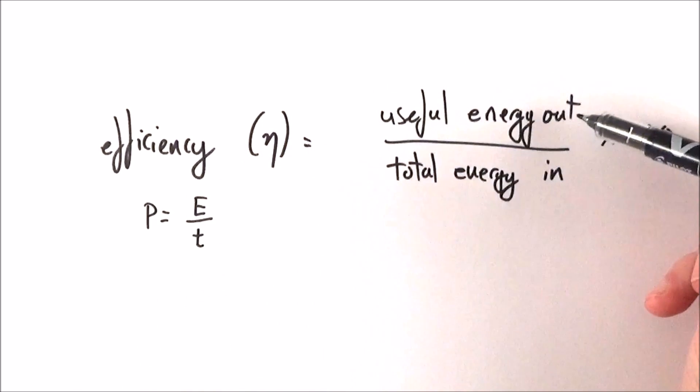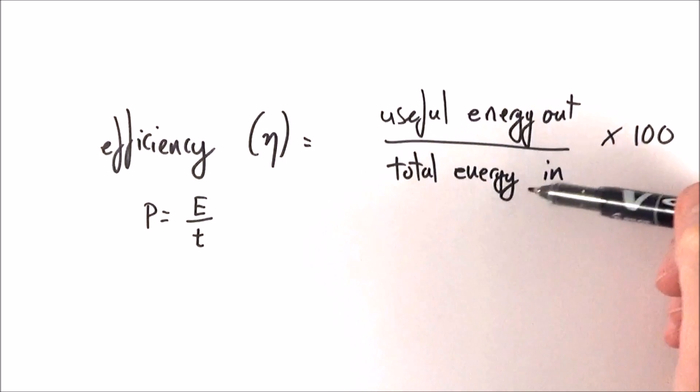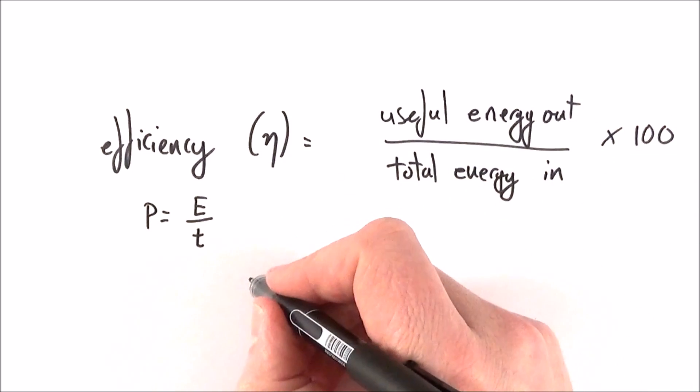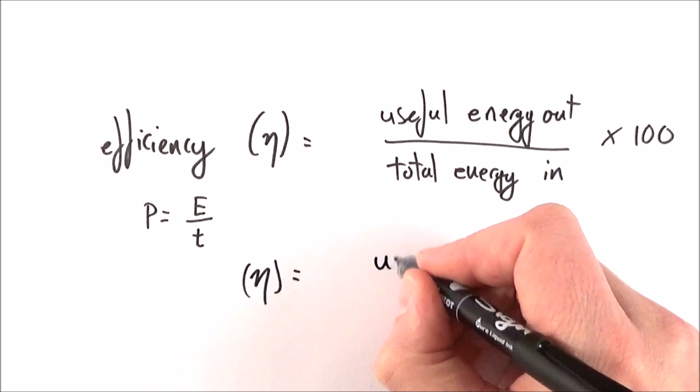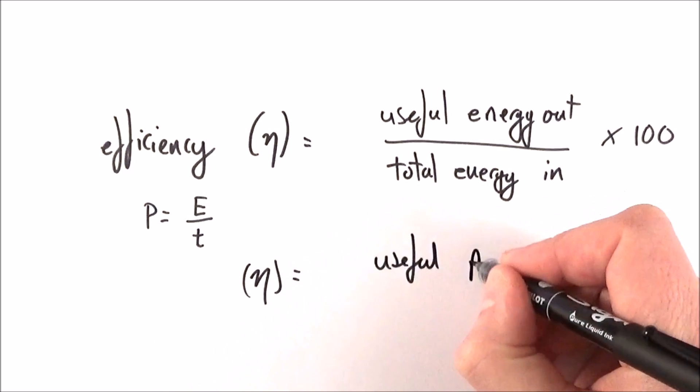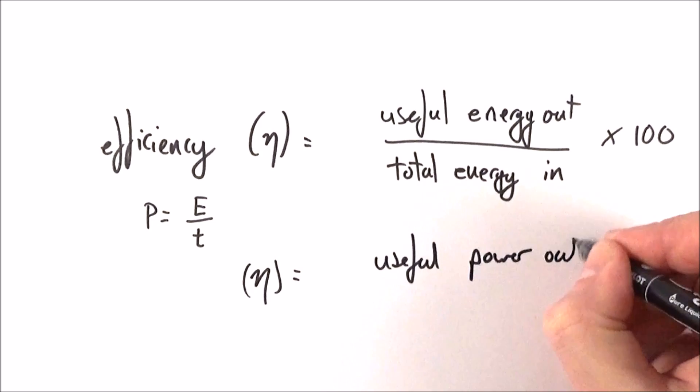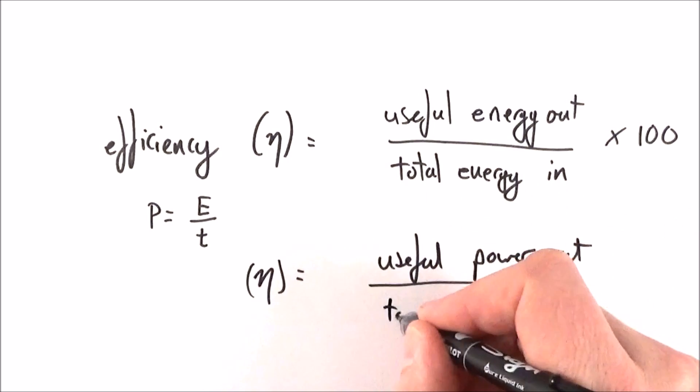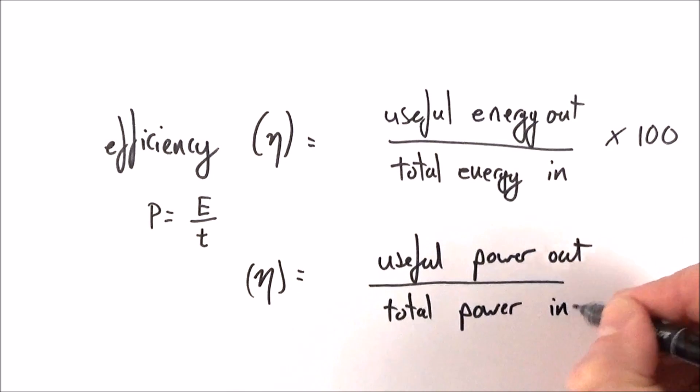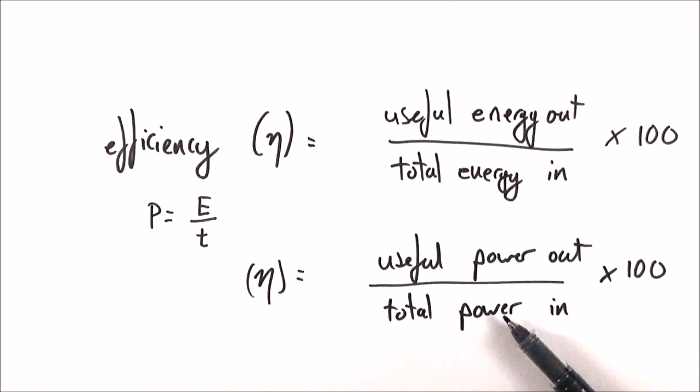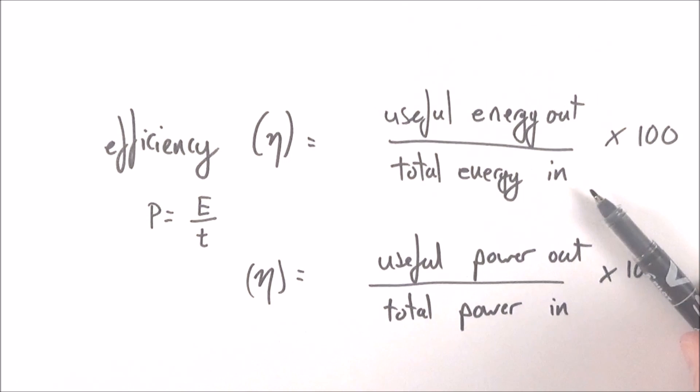If we look at the rate of energy out divided by the total rate of energy in, we can also say that efficiency equals the useful power out of an object divided by the total power in. And again we can multiply by 100 to give us the percentage efficiency in terms of power or energy.